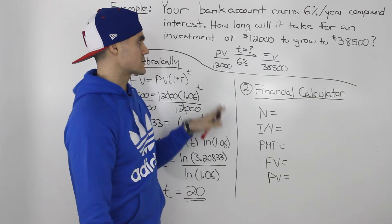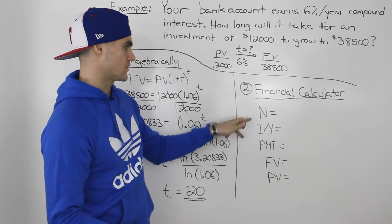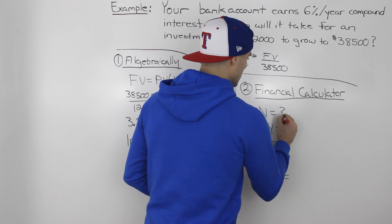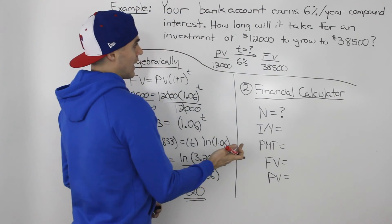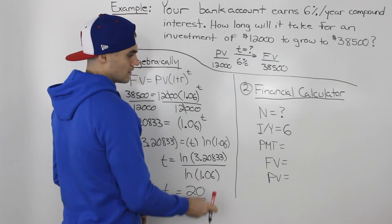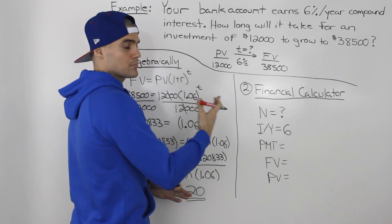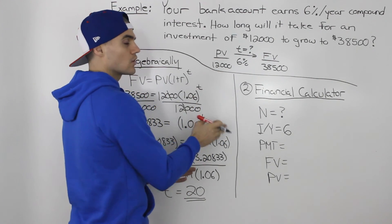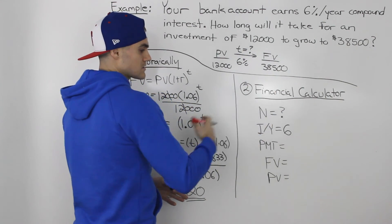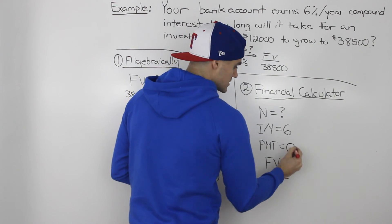And instead, if you were to solve this question with a financial calculator, writing out your five variables: your n, the number of periods, we're actually solving that. We're solving for the time. So that would be a question mark. The IY would be 6%, and you write that as a full percentage, not in decimals like we did here. The payment, cash flows per period, there are no cash flows that are happening within that investment of $12,000. We're just investing it once at the beginning and then getting that final amount at the end. So there's nothing happening in terms of cash flows within those time periods. So that would be zero.